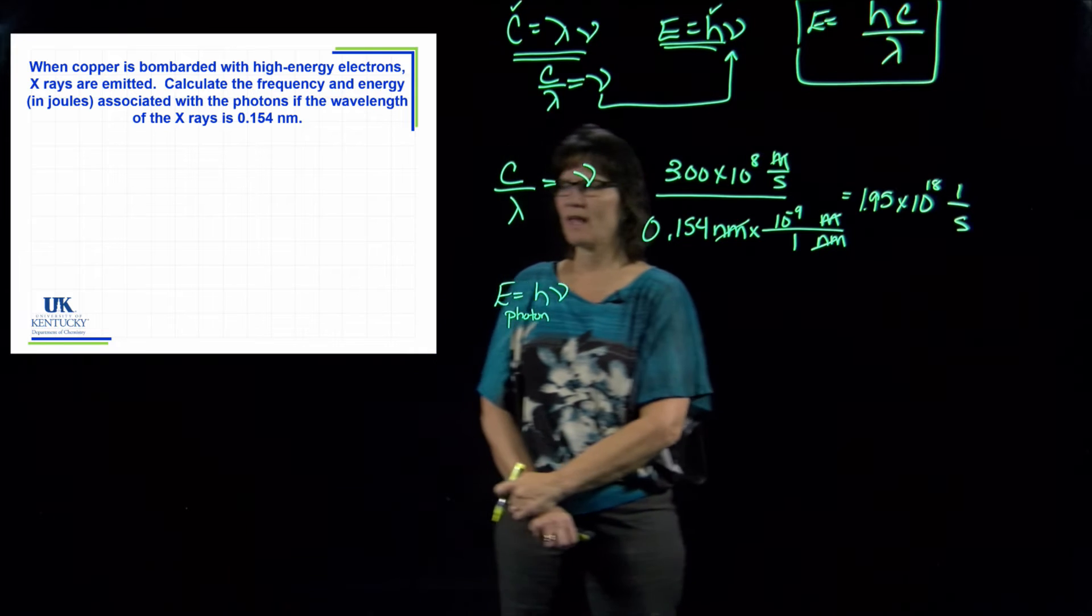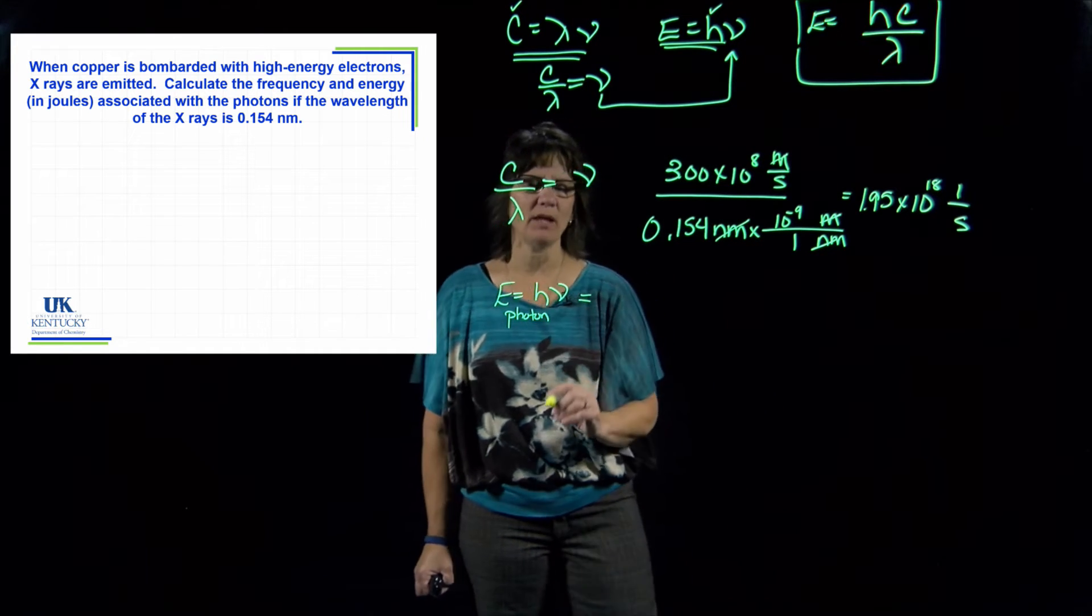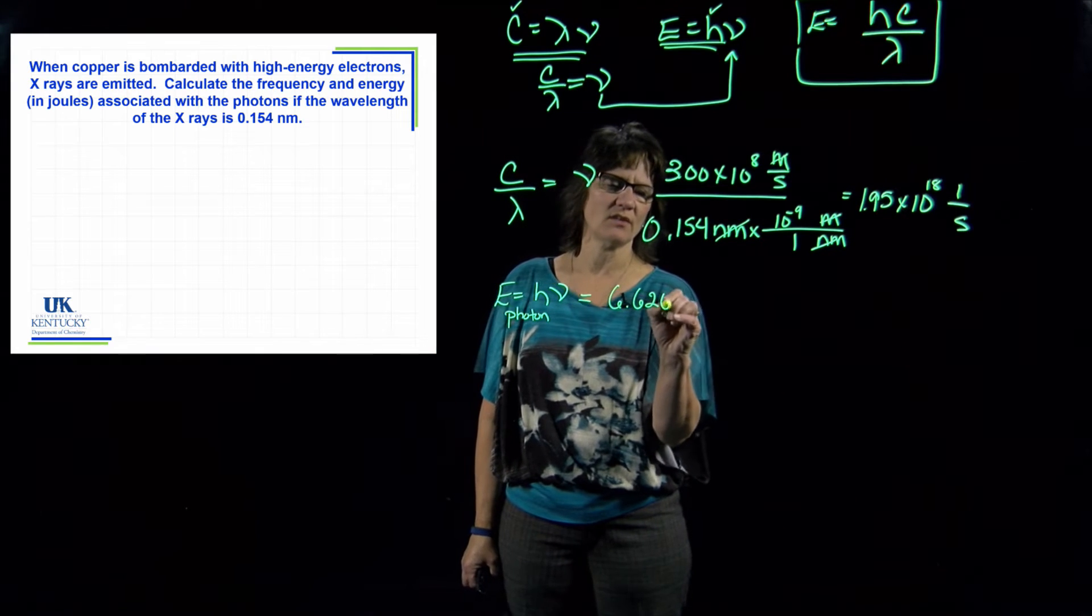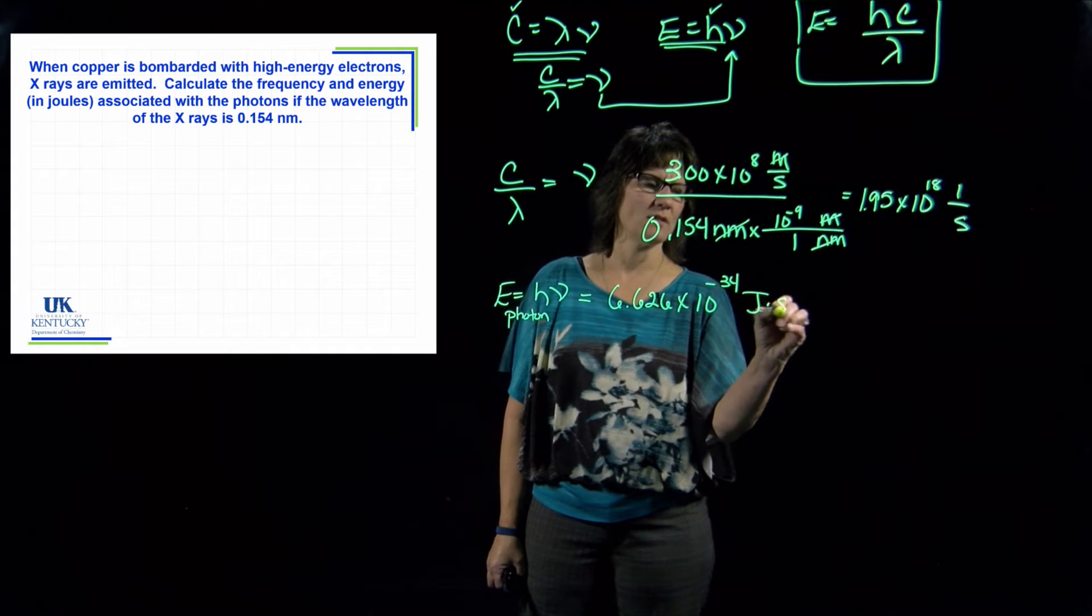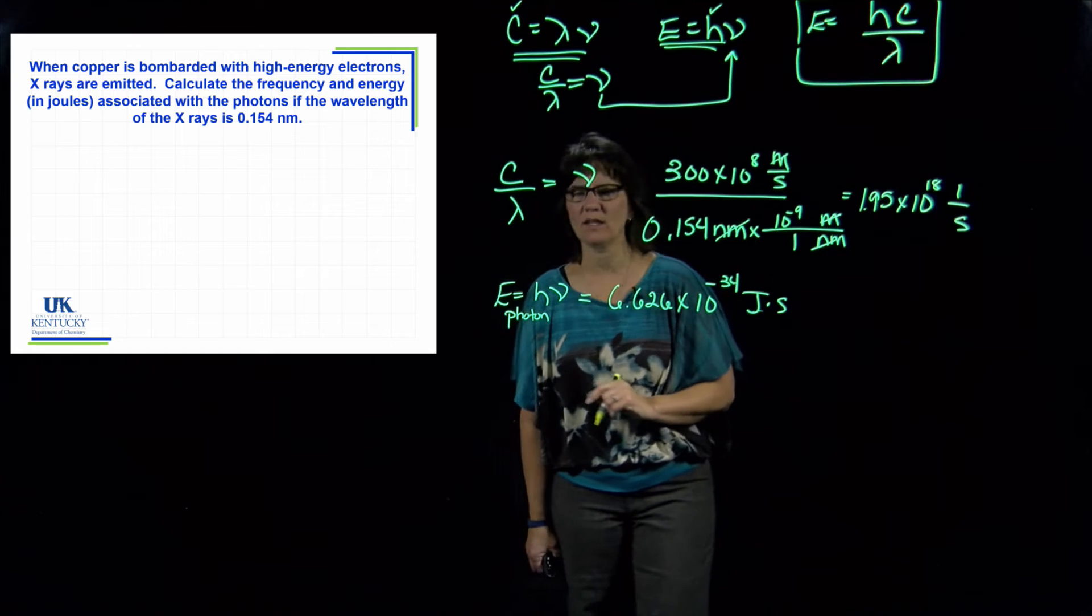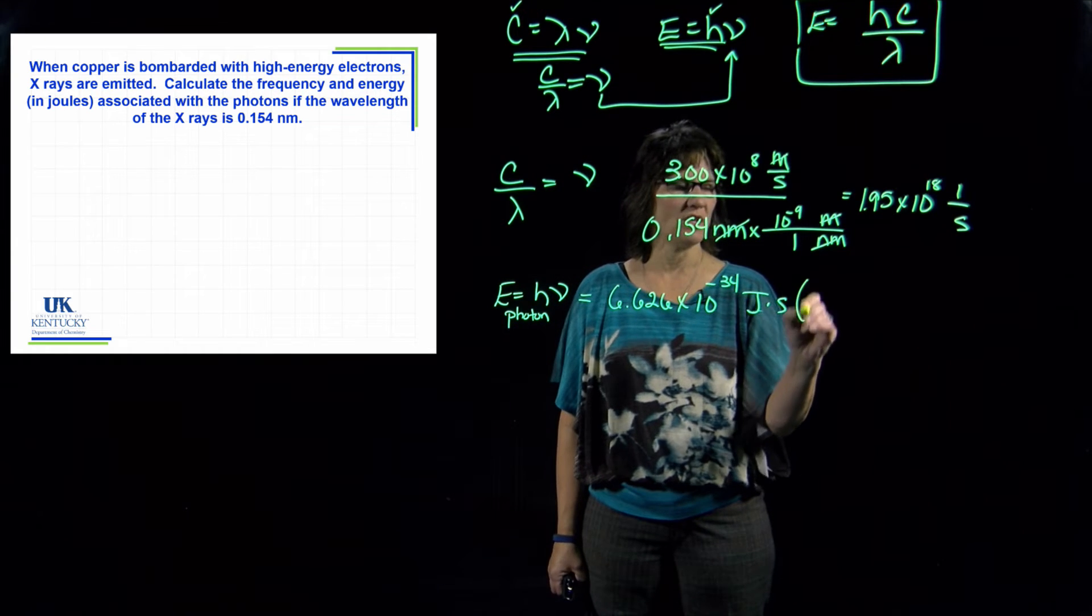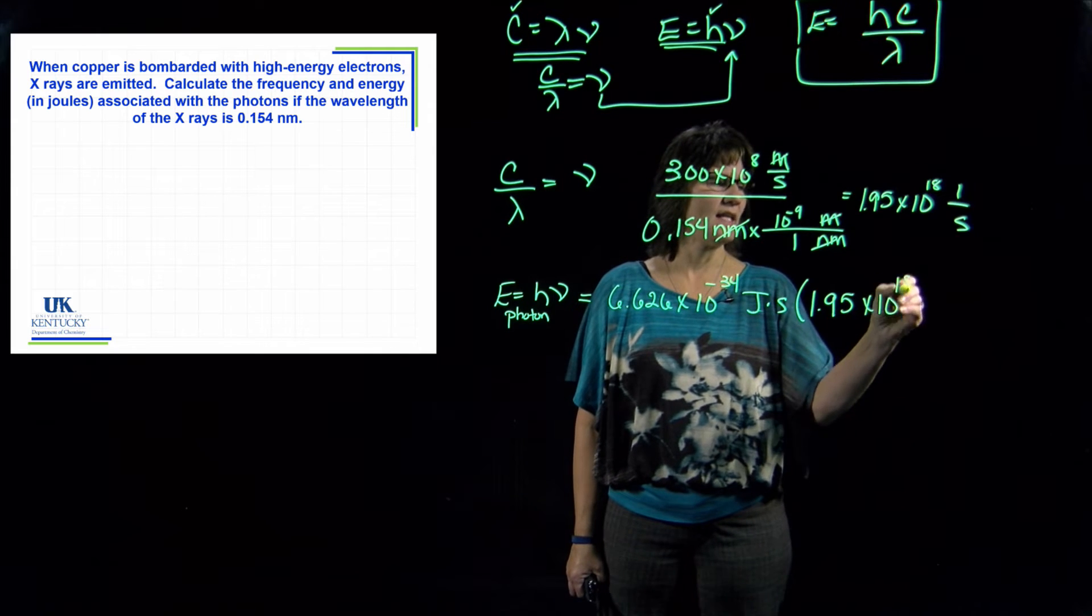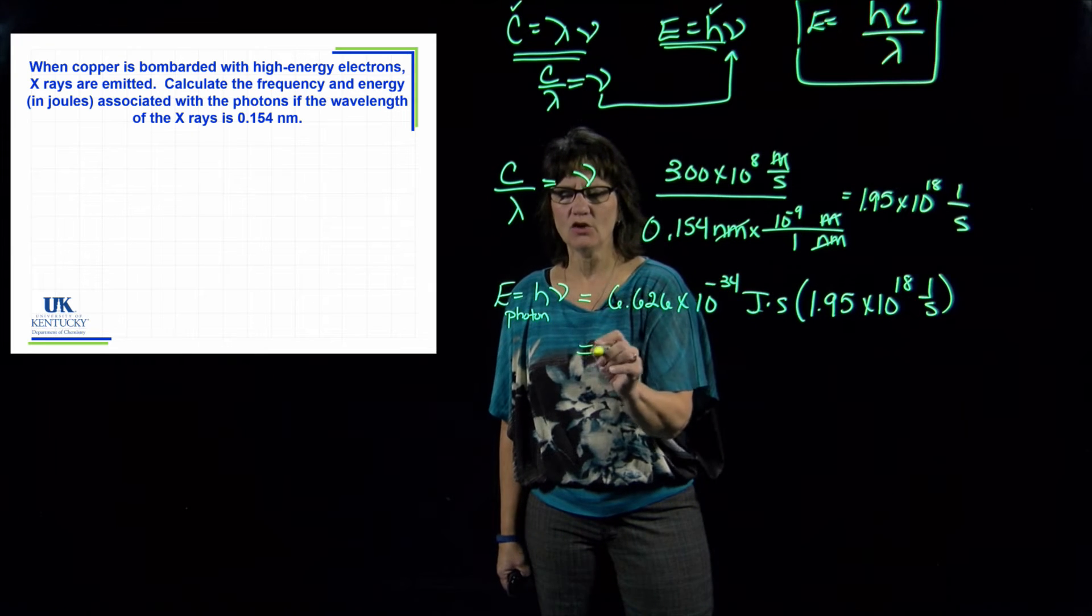We are trying to get the energy, and this is the energy of one photon—that is what that equation will give you, just the energy of one little photon. So we take Planck's constant here: 6.626 times 10 to the minus 34 joules times seconds, that right there is h, and then we have to multiply by our frequency, 1.95 times 10 to the 18th, one over seconds.